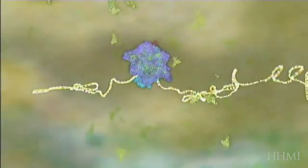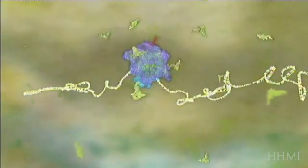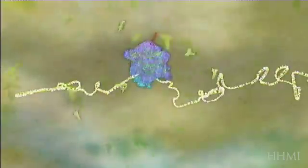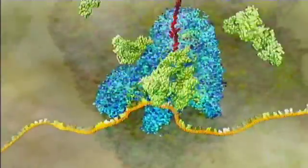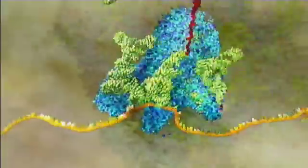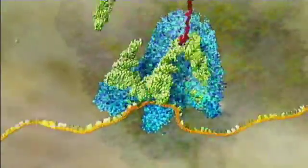The mRNA is also ratcheted on three nucleotides or one codon. Thirdly, the spent tRNA is moved to the E site and then ejected from the ribosome to be recycled.